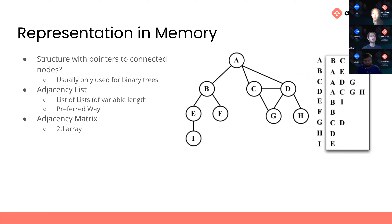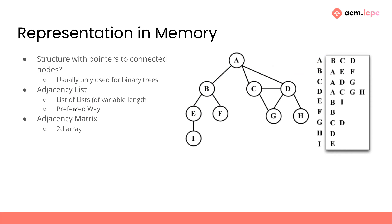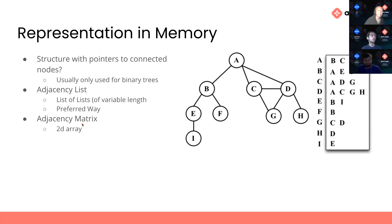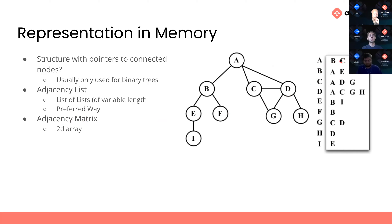An adjacency list is basically a list of what each node is connected to. For each node we have a list of the nodes it's connected to — so if A is connected to B, C, and D, the adjacency list for A will contain B, C, and D. One thing to note: if you have an edge between A and B, you have to add it twice — B into A's list, and A into B's list. Adjacency matrices work similarly but use a fixed-size array of size N, marking true where an edge exists.